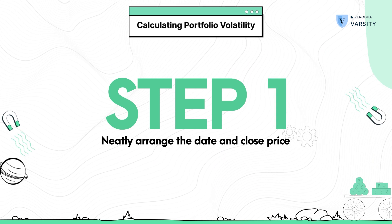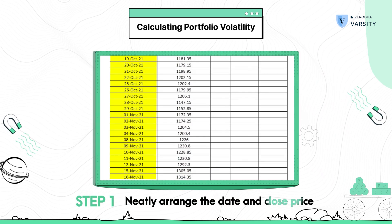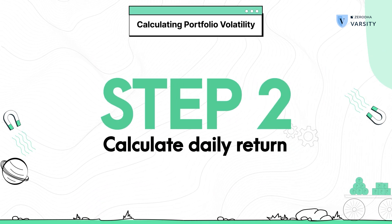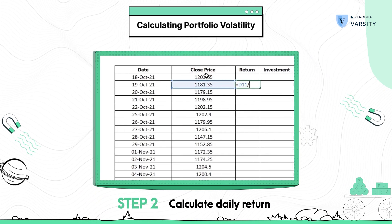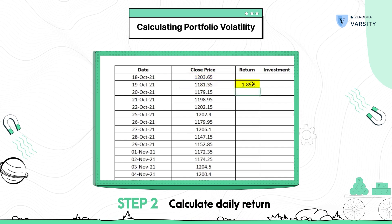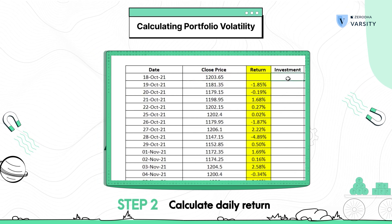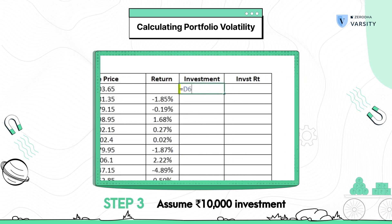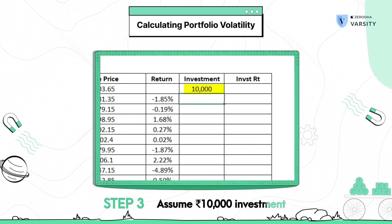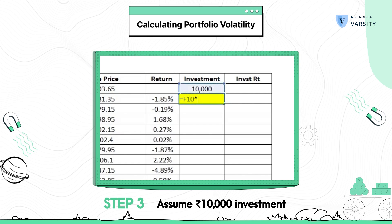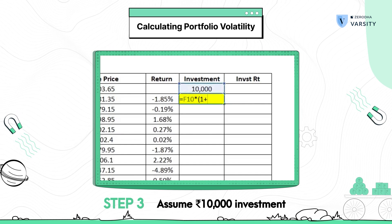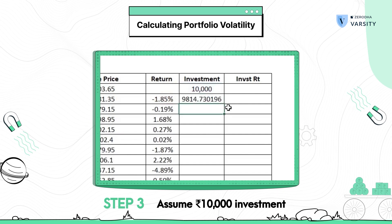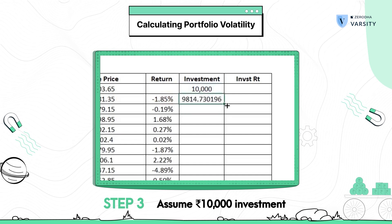Here are the broad steps involved in calculating portfolio volatility. Step 1: neatly arrange the dates and the corresponding closing prices. Step 2: calculate the daily returns of the stock. Step 3: assume a certain investment — in this case, 10,000 rupees invested in Adani Green — and see how that 10,000 rupees varies on a daily basis, which is dependent on the daily returns.